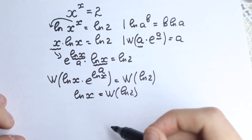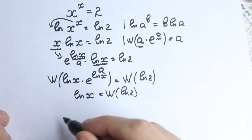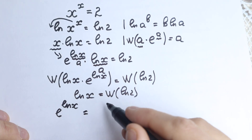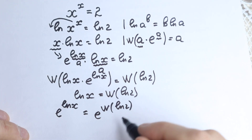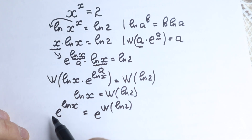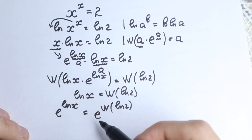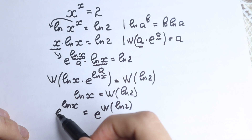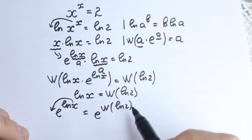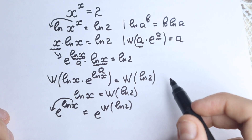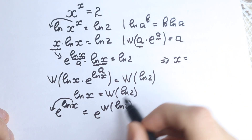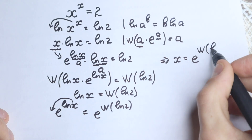To isolate x, we raise e to the power of both sides. On the left we get e^(ln x), and by the natural log property, the e and ln cancel, leaving just x. On the right we get e^(W(ln 2)). So our answer is x = e^(W(ln 2)). We can do this because we apply it to both sides equally.